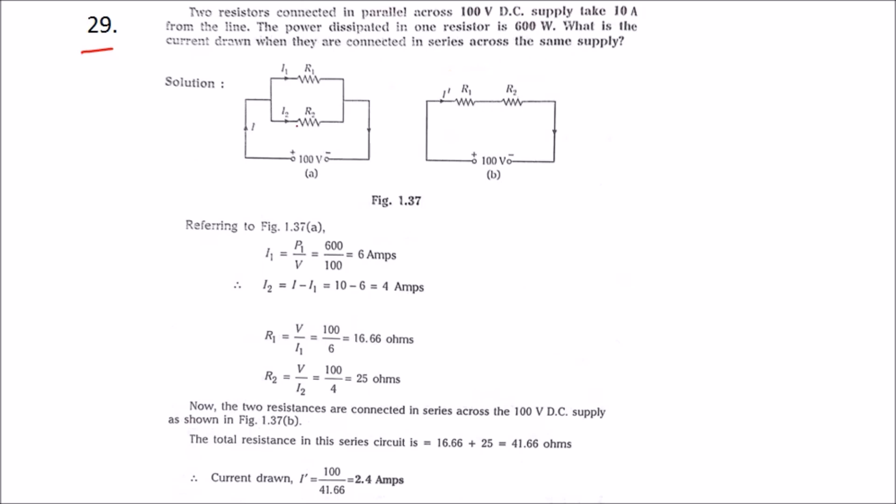They have given the diagram shown as what they have explained in the question. Two resistors are connected in parallel where V is 100 volts.